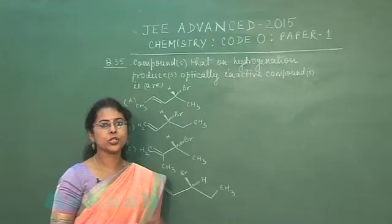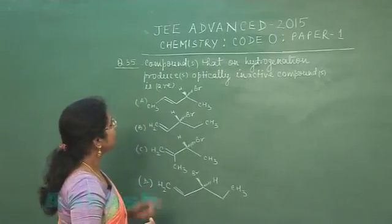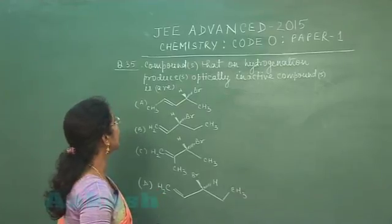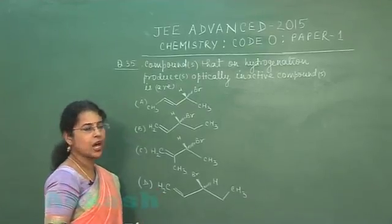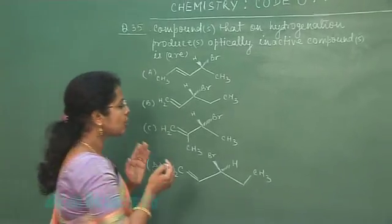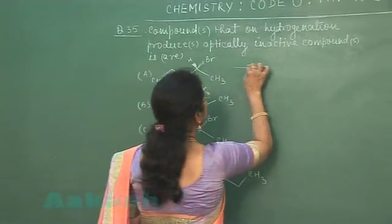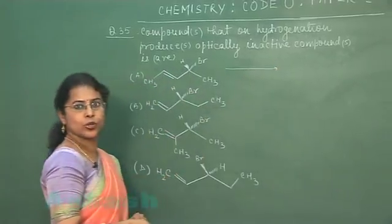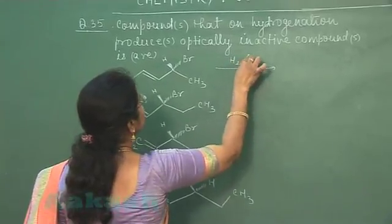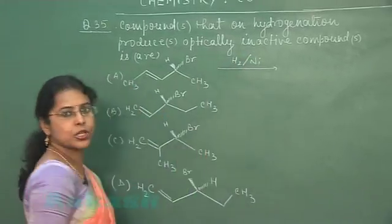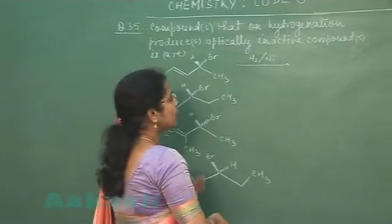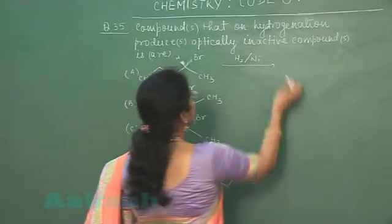Moving to the next question — question number 35. The compound that on hydrogenation produces an optically inactive compound is R. In order to find the answer, we need to write the equation. Hydrogenation is the reaction of hydrogen in the presence of nickel, platinum, or palladium, and it takes place at unsaturated bonds.